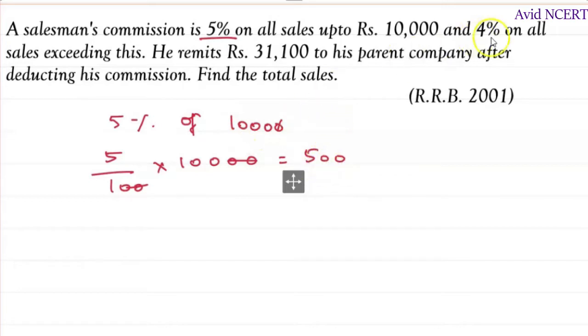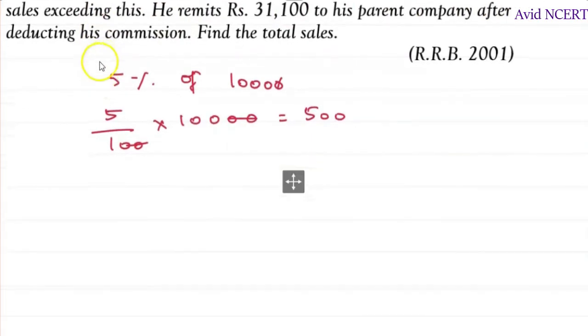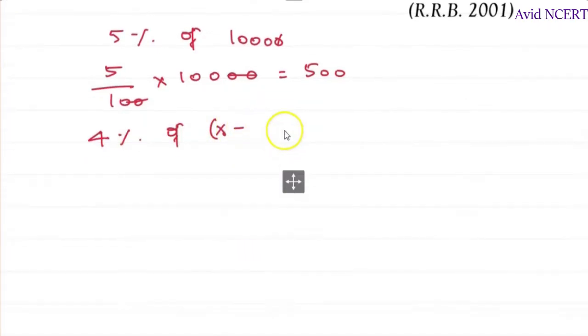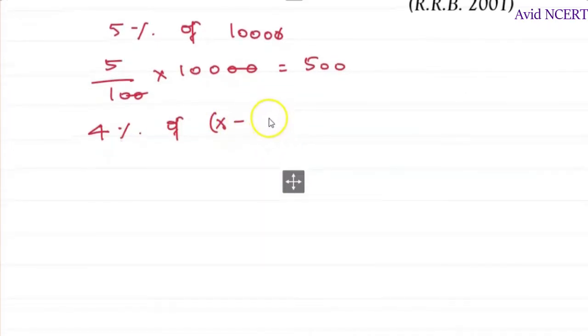And the next sentence is 4% on all sales exceeding this. So whatever the sales exceeding this 10,000, which is 4% of whatever the sales, let it be x, it might be 20,000, 30,000, 50,000, whatever it is.